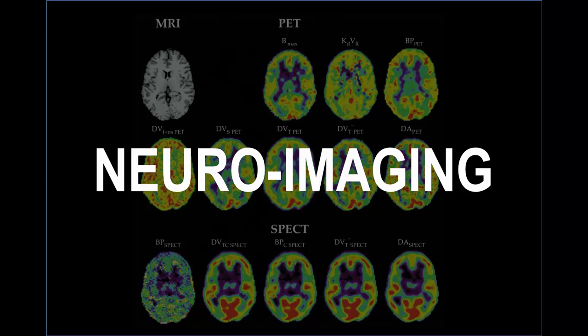Various two- and three-dimensional images can be generated by exploiting differentiating features such as tissue density, calcium content, water content, blood flow, heme oxygenation or redox states, as well as passive or actively induced electromagnetic activity.